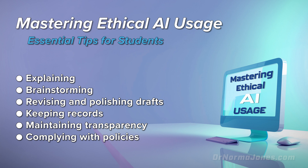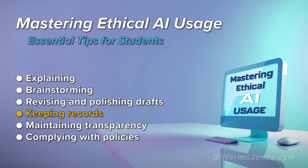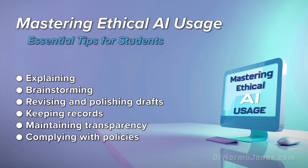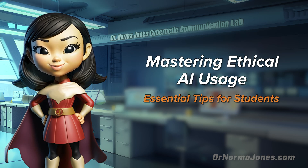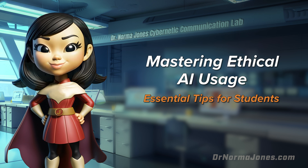In this video, we explored how to master the ethical use of AI. We started by exploring how AI can help explain things such as concepts and assignments. Second, we examined how AI can help you brainstorm ideas. Third, we looked at how AI can help revise and polish drafts before you submit your assignments. Next, we discussed ways of keeping records of your AI usage, so that you can clearly differentiate between your work and your technology assistance. We also looked at ways to maintain transparency when submitting work that used AI assistance. Lastly, we addressed how you should keep up to date with your school's and teachers' AI usage policies. I hope these quick tips will help you master AI ethical usage for your classes now and in your future careers. I'm Dr. Norma Jones. Thank you for watching. Stay tuned and subscribe to my channel for more quick tips on AI usage in academia.